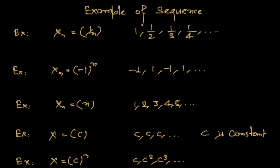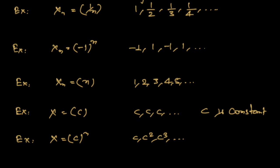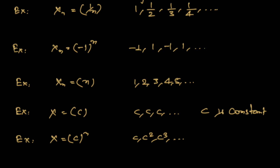Now let's see some examples of sequences. There can be many sequences. For example, a very simple one is a constant sequence — you just take the same element each time. This sequence is very simple and it is called a constant sequence.